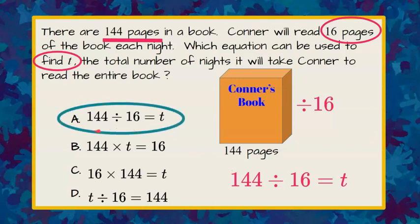So Connor's going to take his 144 page book, divide it into groups of 16 pages, and solve for t to find the total number of nights that he is going to take to read the entire book. Notice that this question did not ask you to solve for t, it just asked you to write the equation. So there you have it.